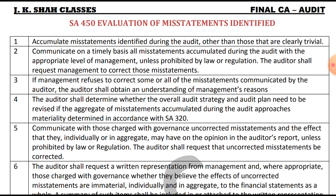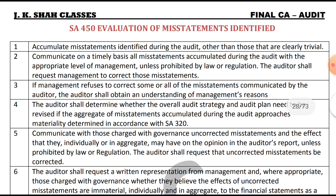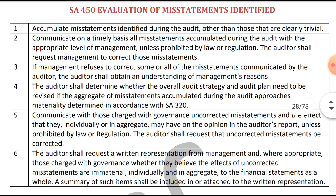The auditor communicates the accumulated material misstatements. The first point states: accumulated misstatements identified during the audit, other than those that are clearly trivial. Clearly trivial means insignificant. So the auditor has to communicate the accumulated material misstatements, other than those that are clearly trivial.